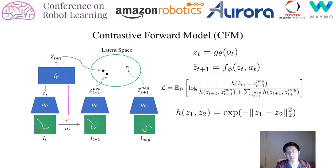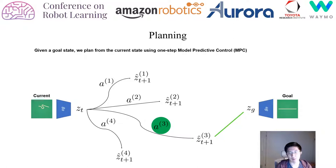The process for planning and evaluating our model is very simple. We use one-step MPC, where given some goal state — in this case a flattened cloth — we encode the current and goal state into z_t and z_g. We then sample a bunch of different actions, run them through our dynamics model, which outputs different predicted ẑ_{t+1} for each action, and choose the action whose predicted latent is closest to z_g. We execute the action and repeat.